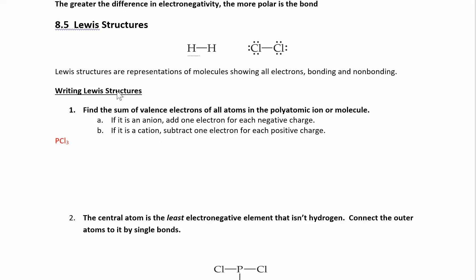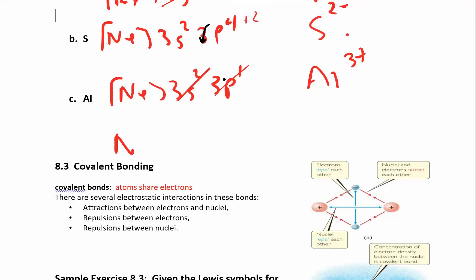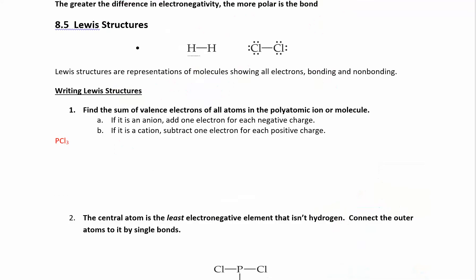The first thing you want to do is add up the number of valence electrons. If you think about hydrogen, hydrogen has one valence electron. So if I have two hydrogen atoms, I have two valence electrons total. If I have one bond between them, each line represents two electrons. So I only need one bond for hydrogen.